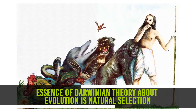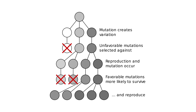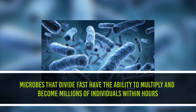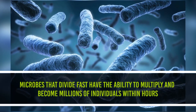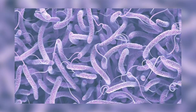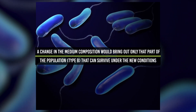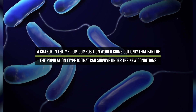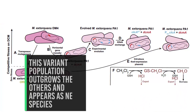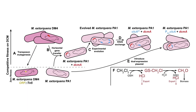Biological Evolution. The essence of Darwinian theory about evolution is natural selection. The rate of appearance of new forms is linked to the life cycle or the lifespan. Microbes that divide fast had the ability to multiply and become millions of individuals within hours. A colony of bacteria type A growing on a given medium has built-in variation in terms of ability to utilize a feed component. A change in the medium composition would bring out only that part of the population of type B that can survive under the new conditions. In due course of time, this variant population outgrows the others and appears as a new species. This could happen within days.